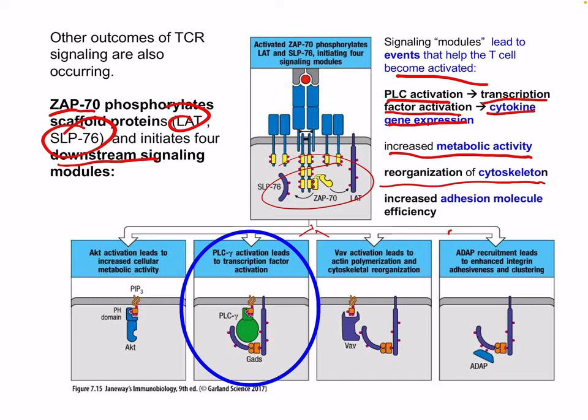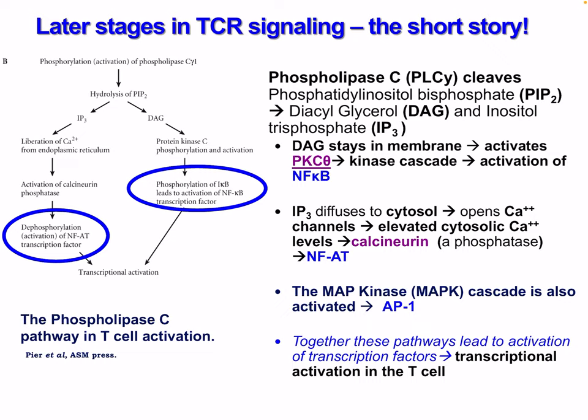With ZAP70 activation phosphorylating LAT and SLP76, we can have AKT activation leading to increased cellular metabolic activity. PLC-gamma activation leads to transcription factor activation and cytokine production. VAV activation leads to active actin polymerization and cytoskeletal reorganization, allowing for optimal T cell function. We also have ADAP recruitment, which leads to enhanced integrin adhesiveness and clustering. All these work together to improve T cell function.